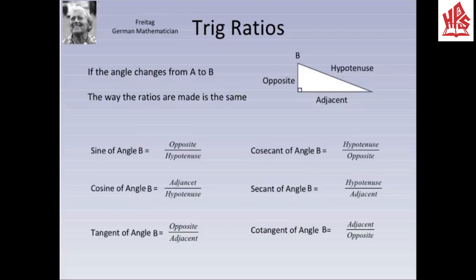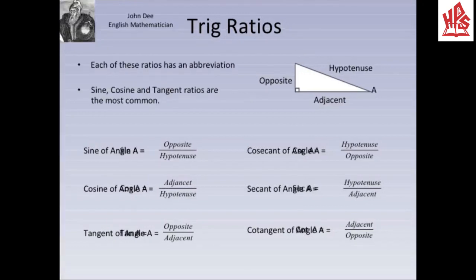If the angle changes from A to B, the way the ratios are made is the same. For angle B, the ratio opposite over hypotenuse is known as sine of angle B, and the ratio hypotenuse over opposite is known as the cosecant of angle B. In a similar way, the names of the ratios remain the same. The ratios sine, cosine, and tangent are the most common and basic ratios among these six, while cosecant, secant, and cotangent are the reciprocals of sine, cosine, and tangent respectively. Each of these ratios has an abbreviation.